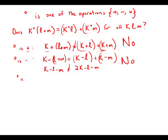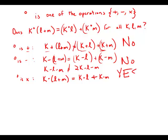If circle is multiplication, then k times (L plus M) equals k times L plus k times M. This, in fact, is the distributive law, and this does work for all values of k, L, and M. So this equation does work if circle is multiplication.